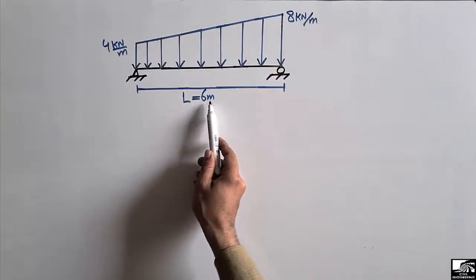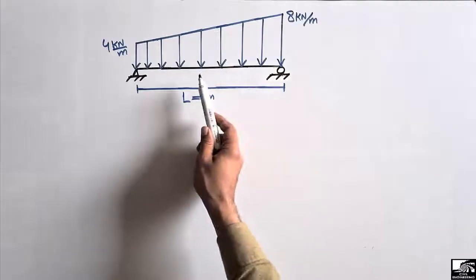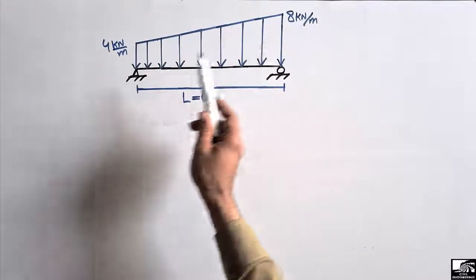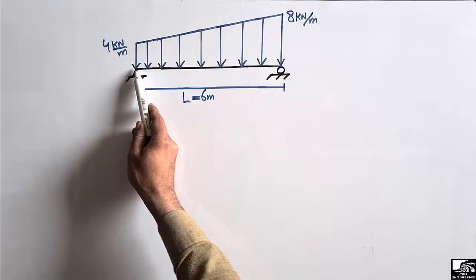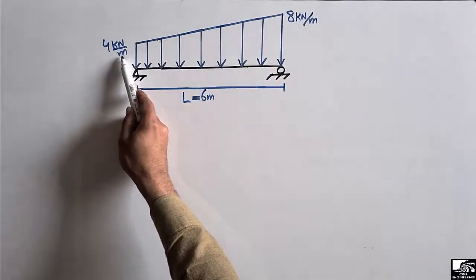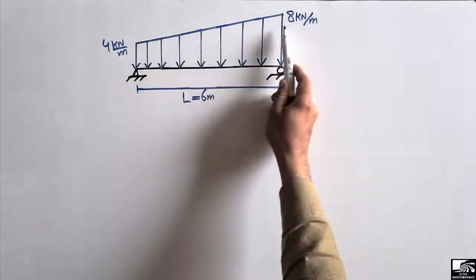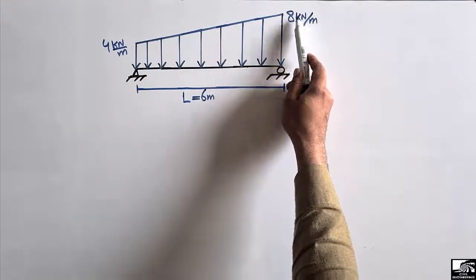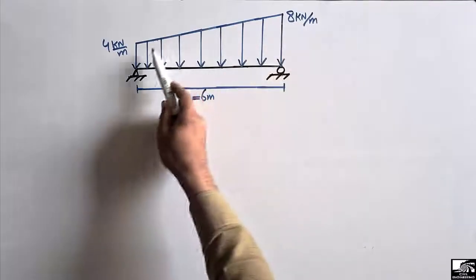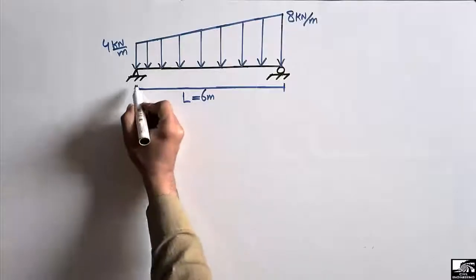This simply supported beam has a length of 6 meters and it carries a uniformly varying load, or we can say it carries a trapezoidal load. The magnitude of the load starts from the left support with a magnitude of 4 kN/m and increases to a maximum magnitude of 8 kN/m.